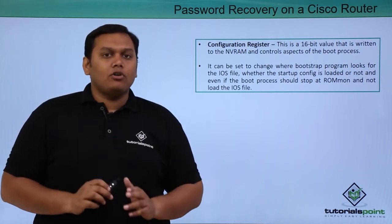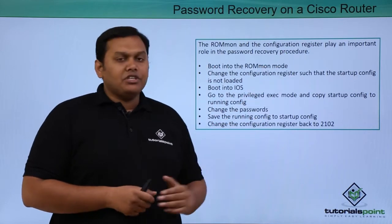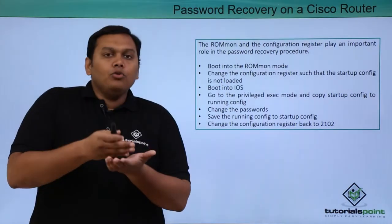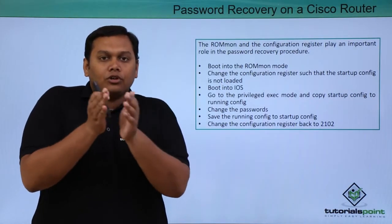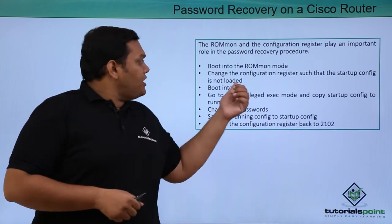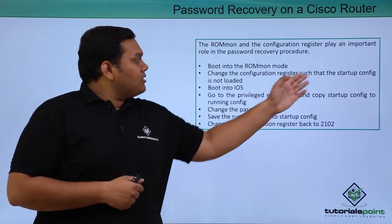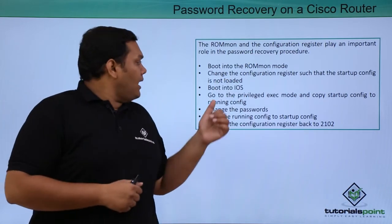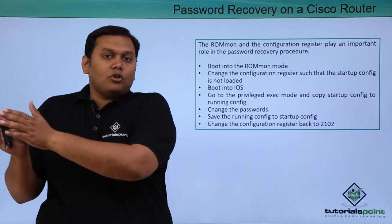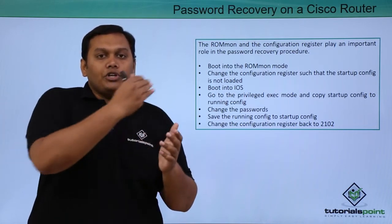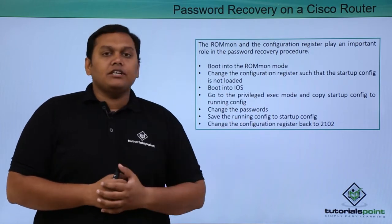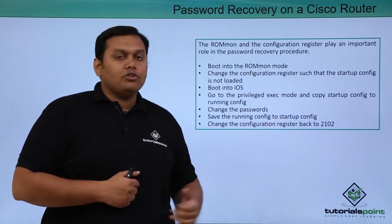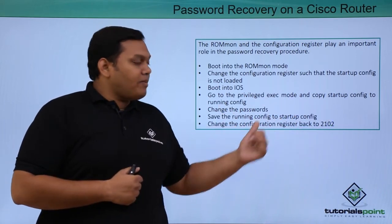The ROM monitor and configuration register play a very important role in these steps. First, boot into ROM monitor mode and change the configuration register so that the startup config is not loaded. Then boot into iOS, and since the startup config is not loaded, go to privileged exec mode. From there, copy the startup config to the running configuration and change the passwords.